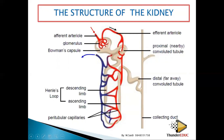After the proximal convoluted tubule, the tubule goes downward, forming the descending limb. The portion going upward is called the ascending limb. When the descending limb and ascending limb are combined together, we call it the loop of Henle.